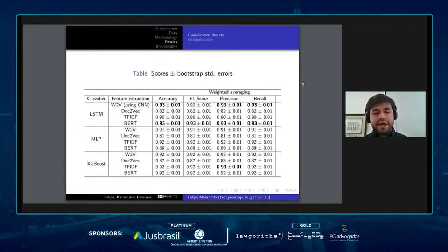Here we have our classification results. As you can see, the best results we got when using the combination of LSTM with Word2Vec, using a convolutional layer to extract features from each text, and LSTM with BERT.